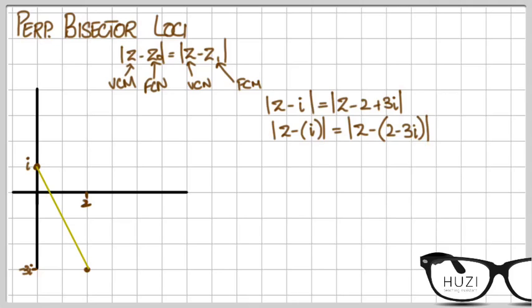So once you've plotted the two points you join them together. This method not to scale but this is how it's supposed to be done. And you basically construct the perpendicular bisector of the line.